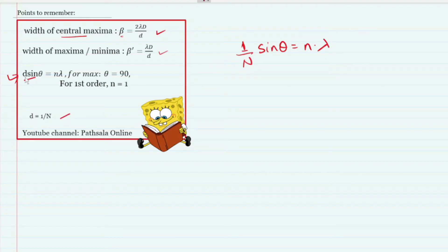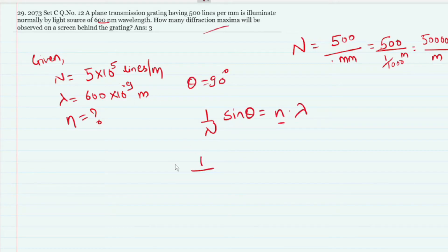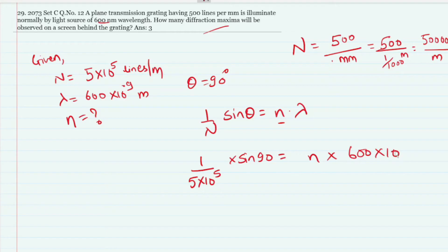Using d = 1/N and setting sin θ = 1 (maximum at θ = 90°): (1/N) × 1 = n × λ, so n = 1/(N × λ) = 1/(5×10⁵ × 600×10⁻⁹) = 3.33. Since n must be a whole number, the answer is 3 diffraction maxima observed.